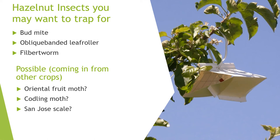Other insects sometimes seen in hazelnuts coming in from other crops include oriental fruit moth, codling moth, and San Jose scale. Whether we need to trap for them remains open, but if you are in an area surrounded by many other fruit crops where these pests are coming in, it's something you may need to consider if you haven't been able to pinpoint the source of other damage. There are traps available for these pests if you suspect you might have them and want to investigate further.